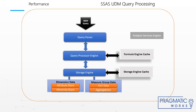It first checks if the requested subcube data is already available in the storage engine cache. If yes, it serves it from there. If not, it checks if the aggregation is already available for the request. If yes, it takes the aggregation from the aggregation store and caches it to the storage engine cache, then sends it to the query processor for serving the request. If not, it grabs the detail data, calculates the required aggregation, caches it to the storage engine, and then sends it to the query processor. While troubleshooting, you need to understand which component is taking more time and needs to be optimized — such as the query processing engine or the storage engine.